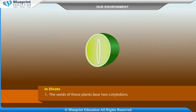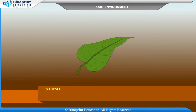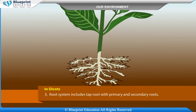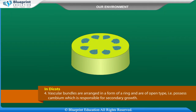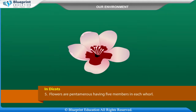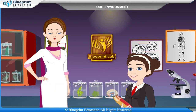Whereas in dicots, the seeds of these plants bear two cotyledons. Venation in the leaves is reticulate. Root system includes a taproot with primary and secondary roots. Vascular bundles are arranged in the form of a ring and are of open type — that is, they possess cambium — which is responsible for secondary growth. Flowers are pentamerous, having five members in each whorl.